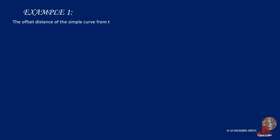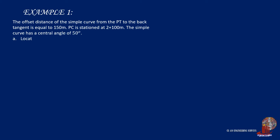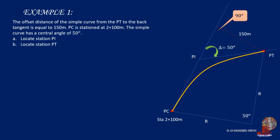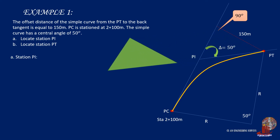Let's do stationing using an example from the previous video. The offset distance of the simple curve from the PT to the back tangent is equal to 150 meters. PC is stationed at 2 plus 100 meters, and the simple curve has a central angle of 50 degrees. Locate station PI and station PT. The distance from PC to PI is described by the tangent distance T. By taking the right triangle from the offset, T equals 150 sine 50 degrees, which gives 114.91 meters.